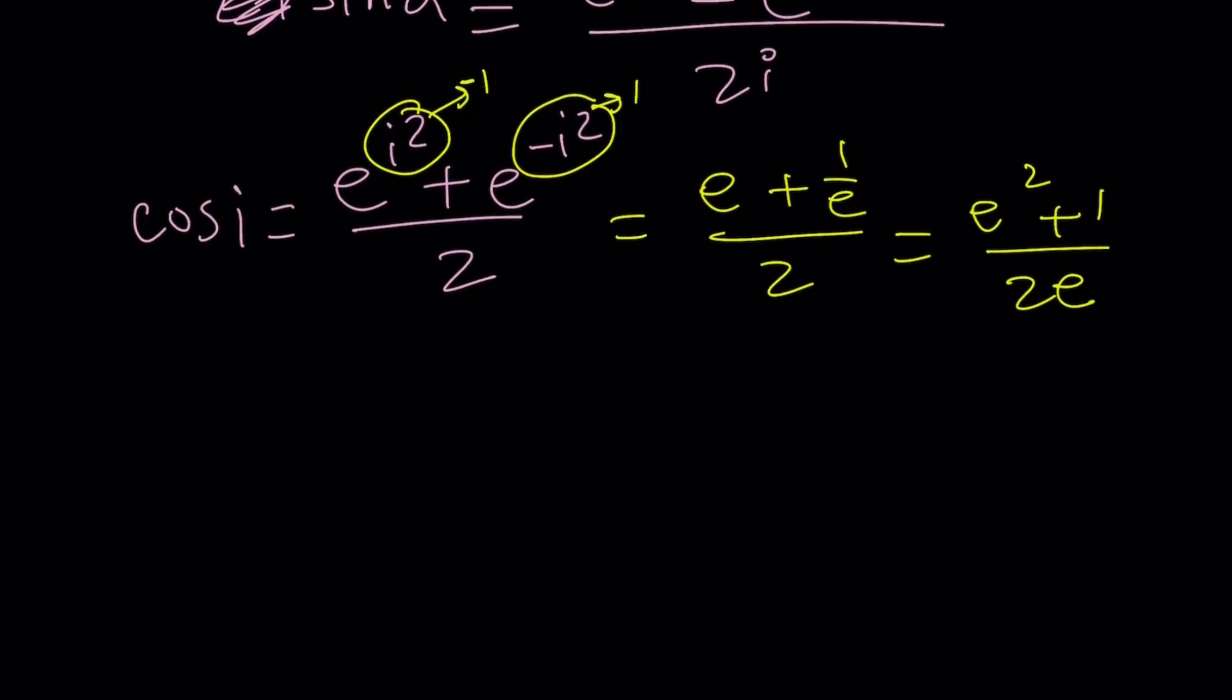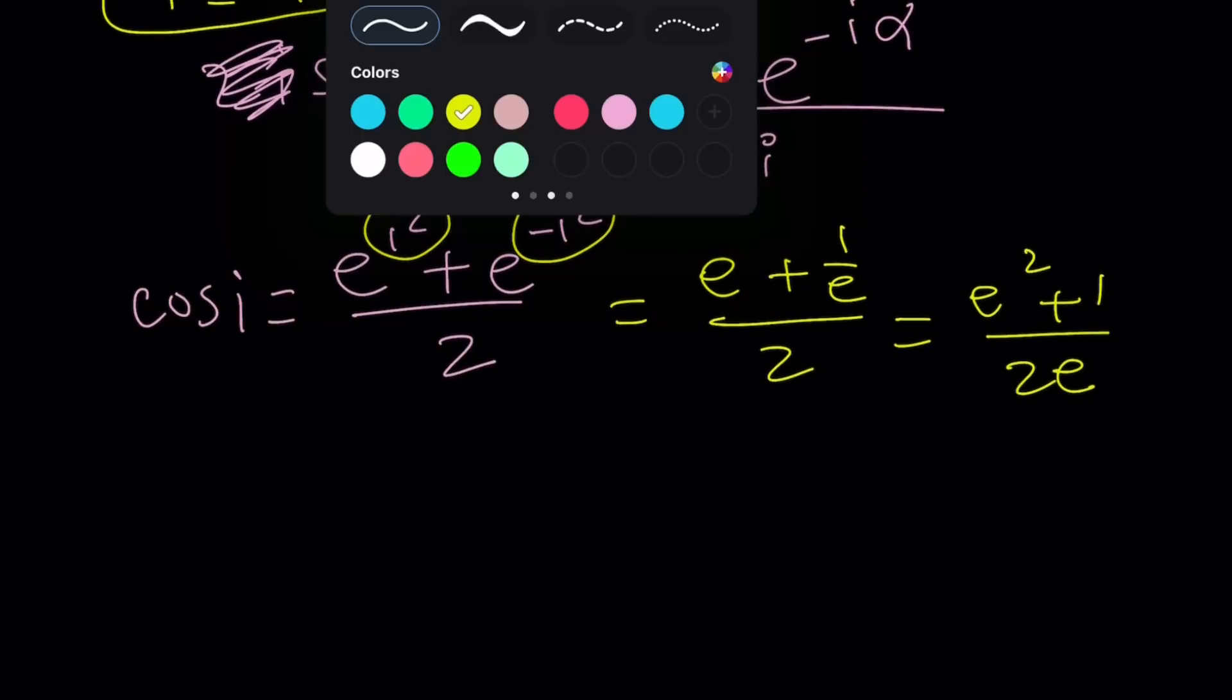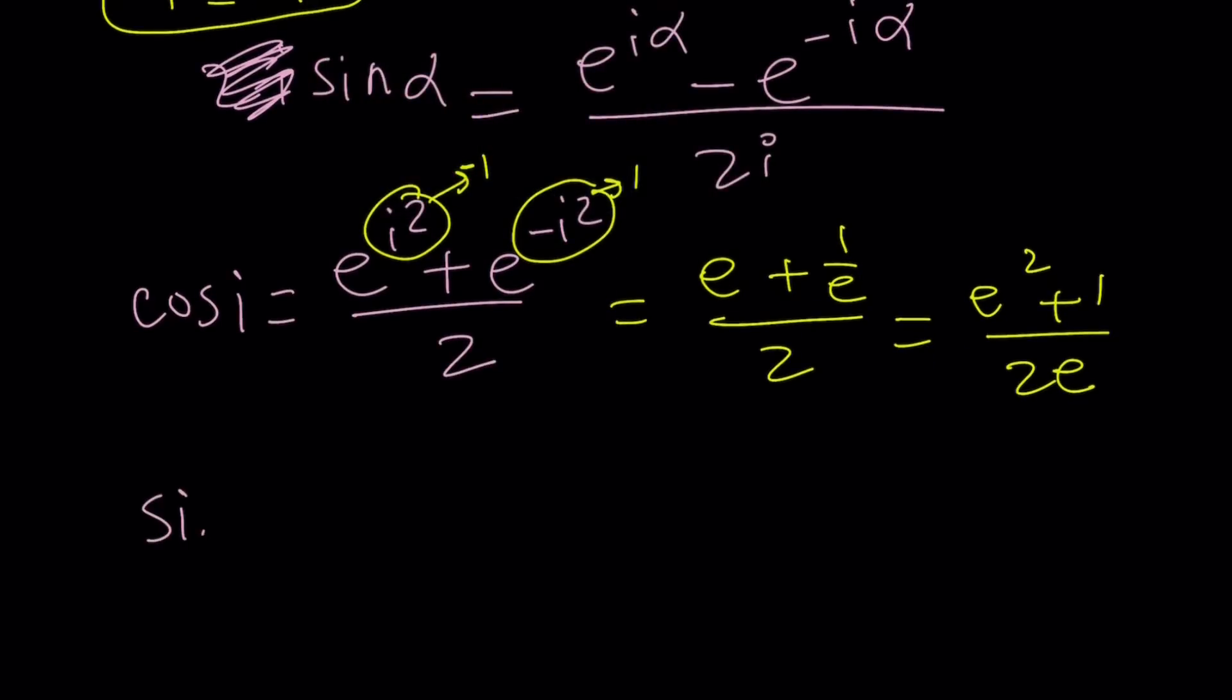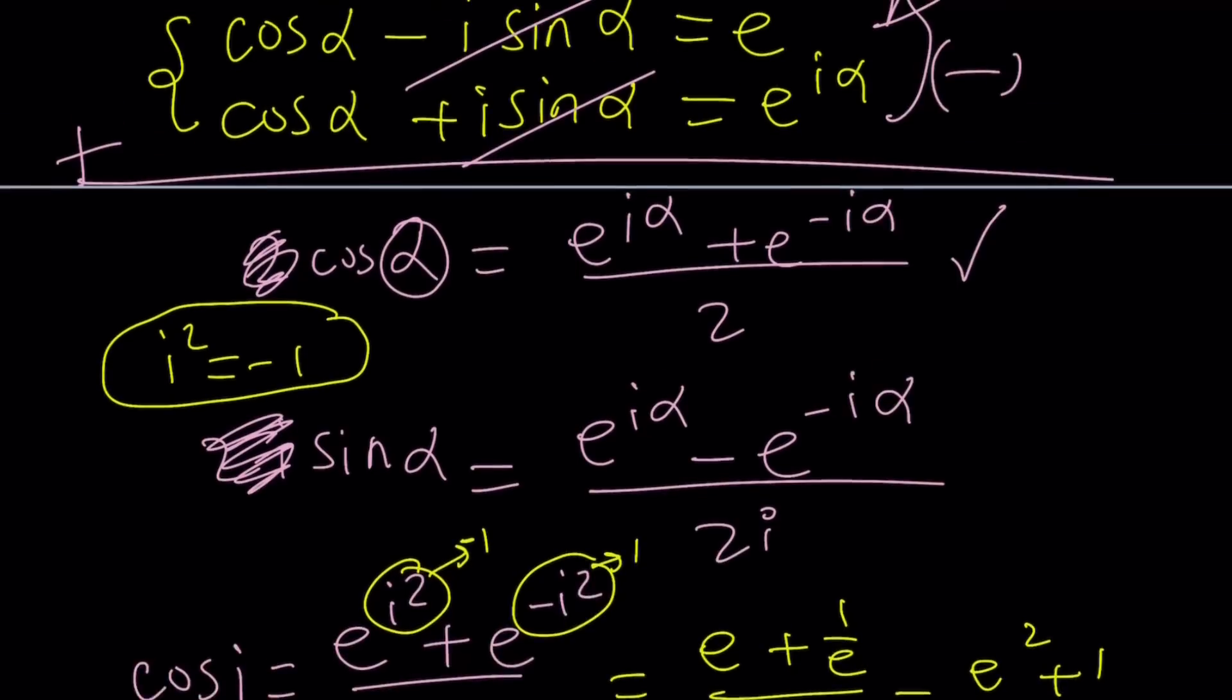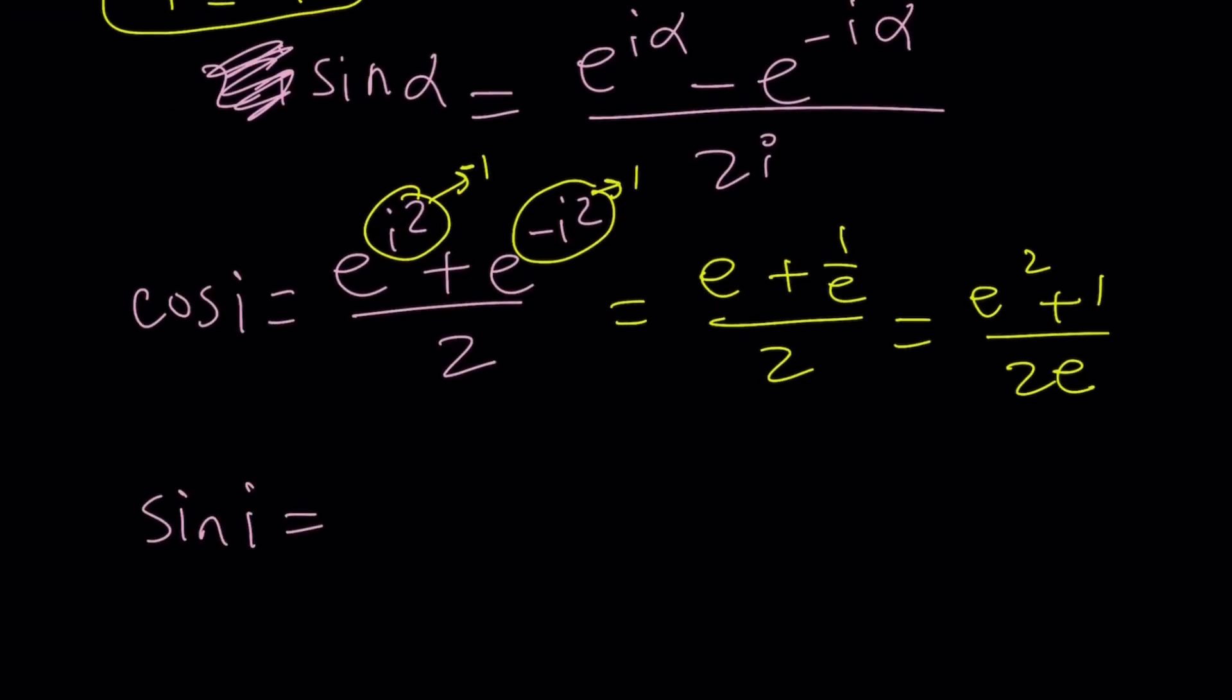Okay. Now, this is cosine i, and as you can see, it is very, very real. Okay. So hopefully you believe that. And now sine i, sine of i, is going to be from here. We're going to get e to the i squared minus e to the power negative i squared divided by 2i. And then we're going to work it out.